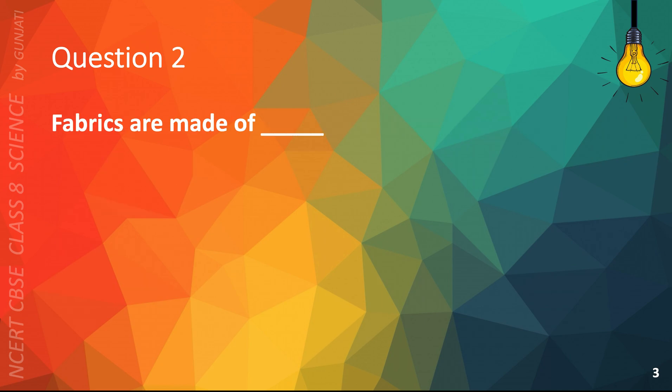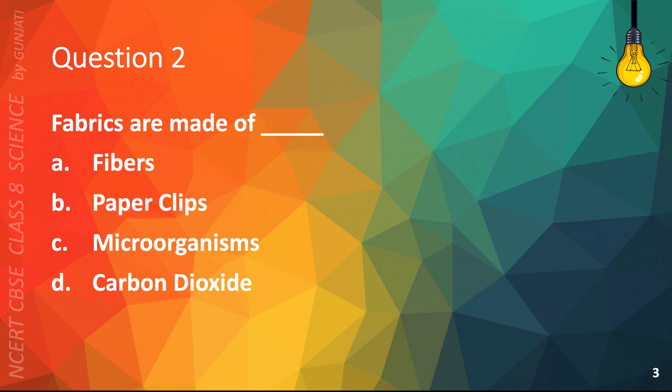Question 2. Fabrics are made of A. Fibers, B. Paperclips, C. Microorganisms, or D. Carbon Dioxide. The correct answer is A. Fibers.